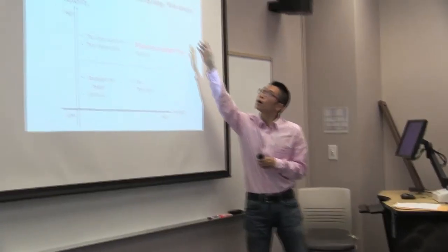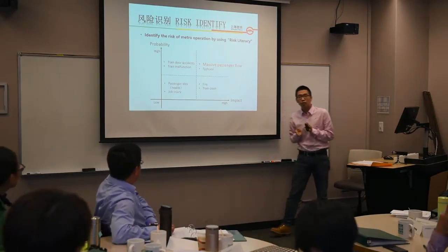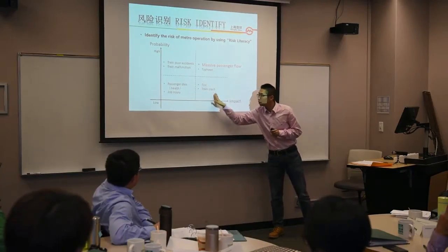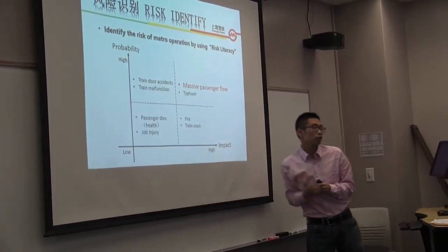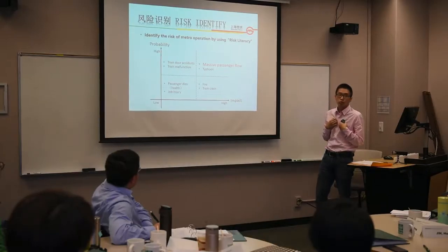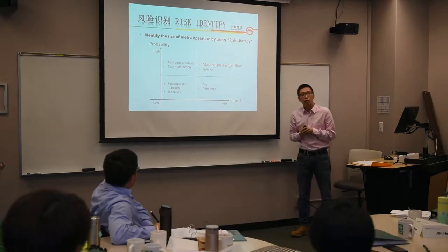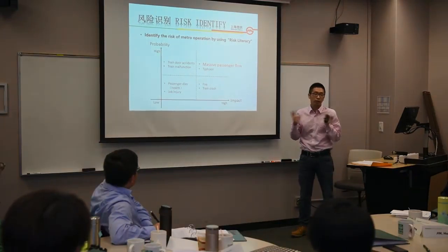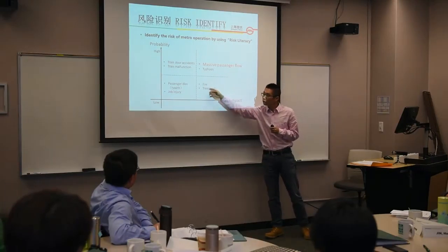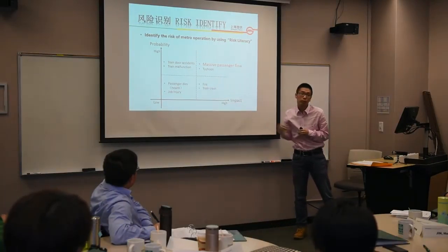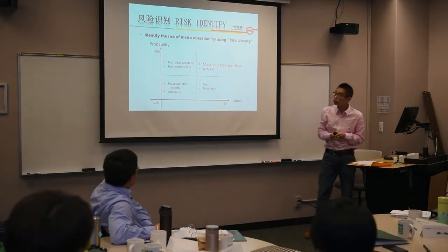We use risk literacy to identify some of the risks in Metro train operation. As Professor David told us, we need to focus on risks with high impact and low probability, such as fire or train crash, because they are uncertain. But we also want to focus on massive passenger flow, because in Shanghai Metro it happens often and affects the whole city and everyone. Many high-impact, low-probability risks can also cause massive passenger flow, so we want to focus on this risk.